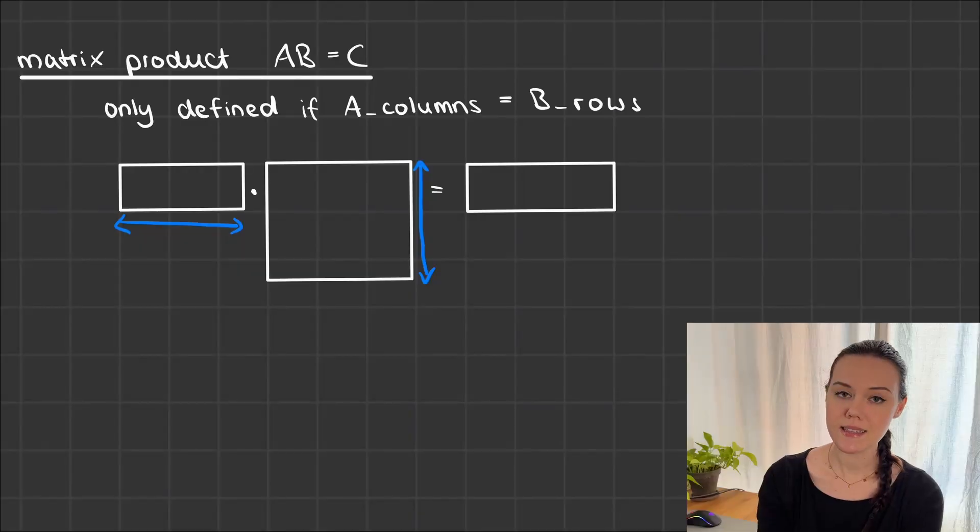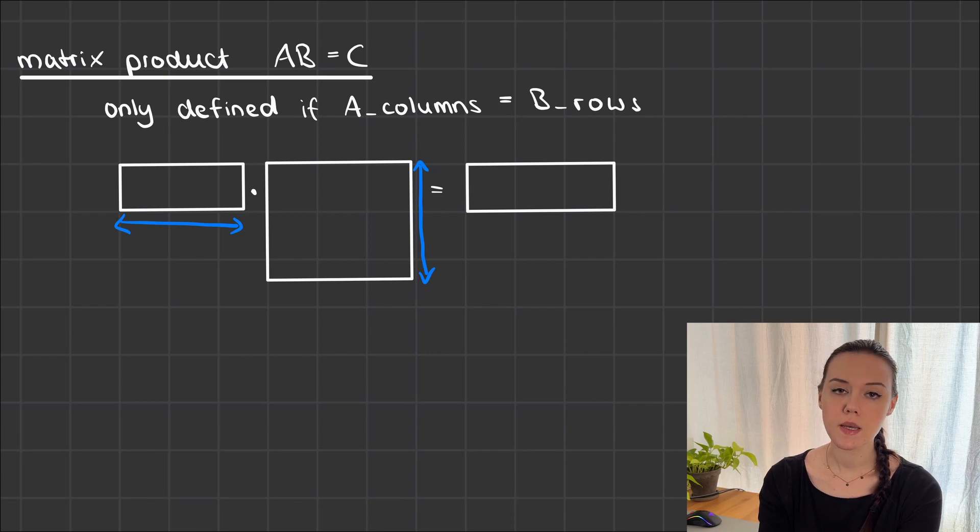A product in general is what we call the result of multiplying two elements together, in this case two matrices. But unlike numbers where you can multiply any two of them together, matrices you have to be a bit careful. The matrix product A times B is only defined if A has the same number of columns as B has rows.